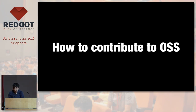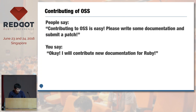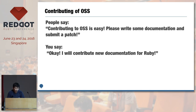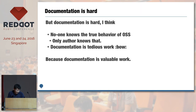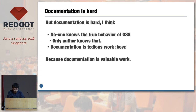So, how to contribute to OSS — do you have an OSS product? Many people say OSS is great, so you can contribute to or develop OSS. They say: please do documentation. You imagine documentation is easy, so you try to contribute documentation to OSS. But documentation is hard, especially in Ruby's situation. No one knows the true behavior of the Ruby language — only Matz knows it.